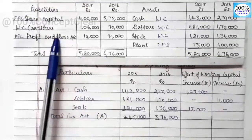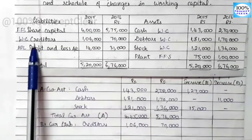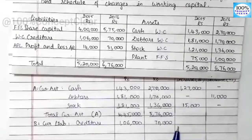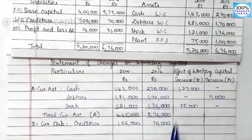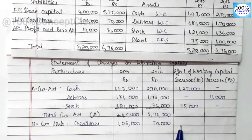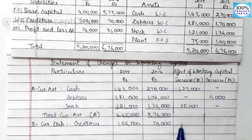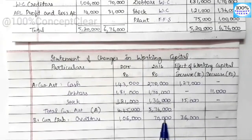For current liabilities, we have creditors. Looking at the amounts: in 2015, creditors are 1,60,000 and in 2016, they are 70,000. Creditors have decreased. Because the creditors decreased, the working capital will increase. We note this in the increase column as 36,000 increase in working capital due to the decrease in current liabilities.